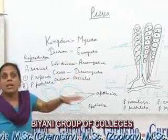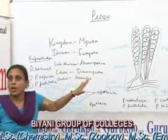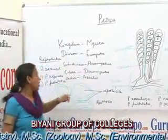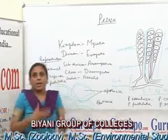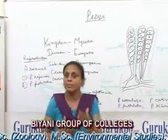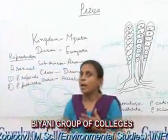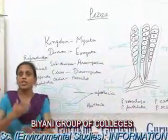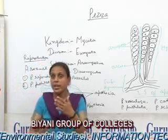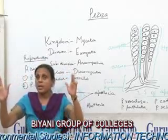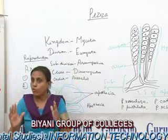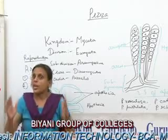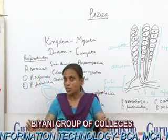Moving to reproduction in Peziza — asexual reproduction is absent in most species, but in some species like Peziza rependa and Peziza pustulata, reproduction occurs by means of conidia or chlamydospores. The tip of the hyphae swells to form a conidiophore, which is a long, cylindrical, septate, unbranched structure.